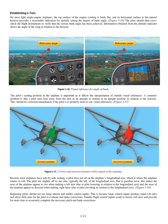The pilot's seating position in the airplane is important as it affects the interpretation of outside visual references. A common problem is that a pilot may lean away from the turn and attempt to remain in an upright position in relation to the horizon. This should be corrected immediately if the pilot is to properly learn to use visual references. Because most airplanes have side-by-side seating, a pilot does not sit on the airplane's longitudinal axis. The pilot sits slightly off to one side — typically the left — of the longitudinal axis.